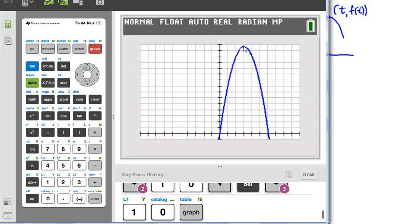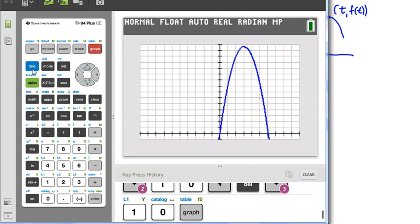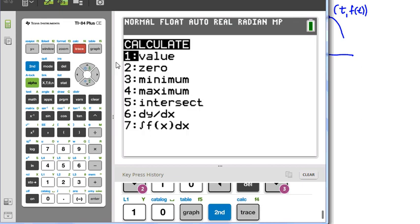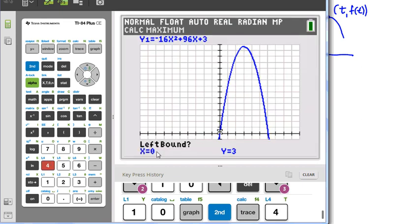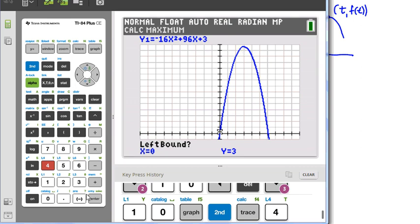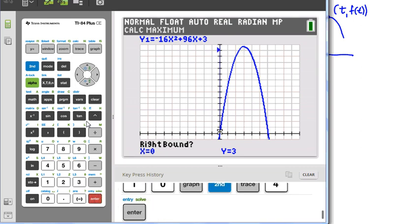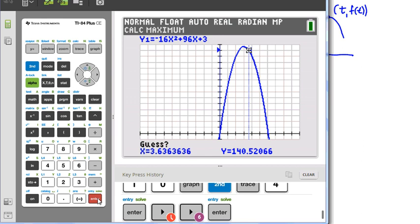To get our maximum, we can trace the top here or we can go to second, trace, maximum, which is four. Then it says left bound—we're already to the left of the apex. Press enter. Now for right bound, you can just arrow to the right and press enter, enter again.